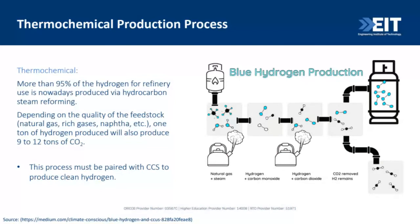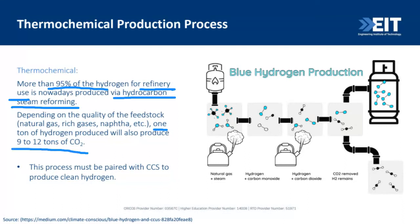Now focusing on the thermochemical production process: steam methane reforming (SMR) is a very famous process used in chemical, mining, and food industries. Currently, 95% of hydrogen for refinery use is produced via SMR. Depending on the feedstock quality — natural gas, naphtha — for every ton of hydrogen produced, 9 to 12 tons of CO₂ are also produced. This is a big concern, which is why we are exploring ways to reduce fossil fuel use and find other means of producing hydrogen.